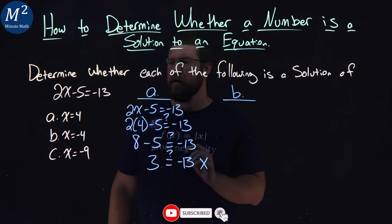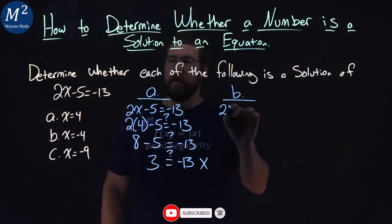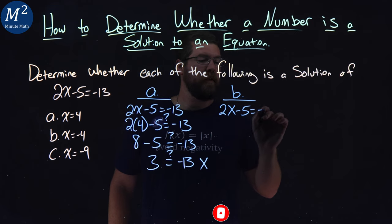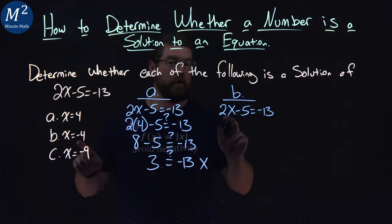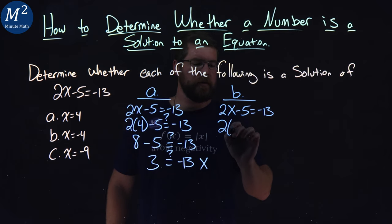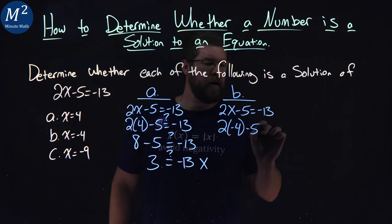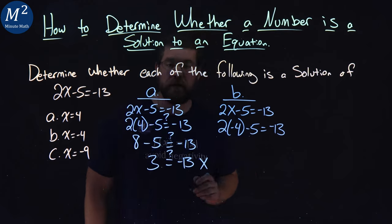Let's try b. Rewrite the equation again. 2x minus 5 equals negative 13. I'm going to plug in negative 4 in for x. 2 times negative 4 minus 5 equals negative 13.